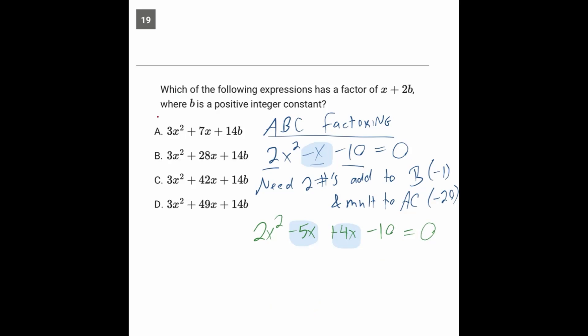And the next thing you do in this method is factor by grouping. So you take the first two and get a common factor out of there, x, 2x minus 5, and then another common factor from the next two, plus 2, 2x minus 5. And now we have two terms that both have a factor of 2x minus 5.